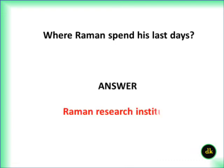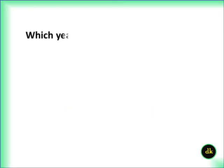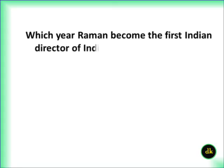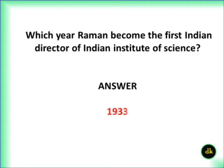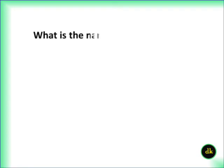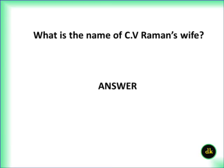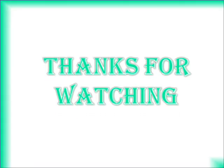Which year Raman became the first Indian director of Indian Institute of Science? 1933. What is the name of C.V. Raman's wife? Lokasundari Ammal. Thank you.